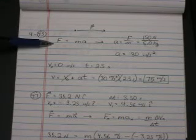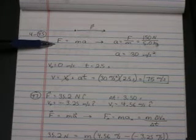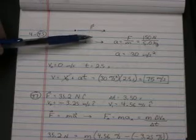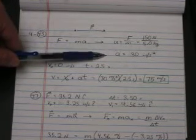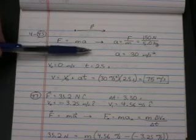Here's our force diagram. F equals ma. We can use that to solve for acceleration. So, acceleration is force over mass. 150 divided by 5 kilograms. So, we get an acceleration of 30 meters per second squared.